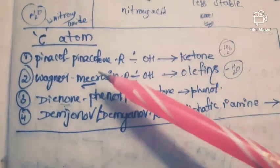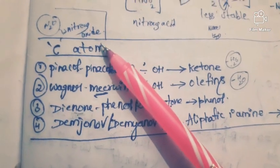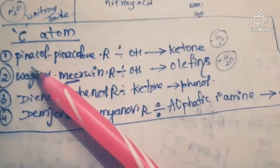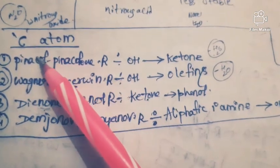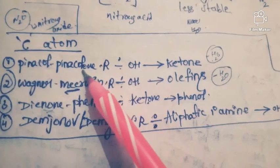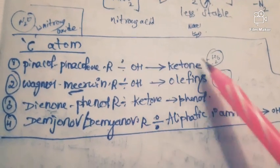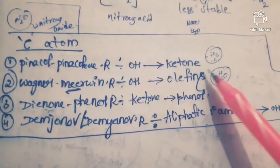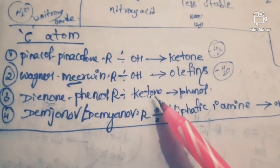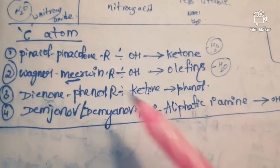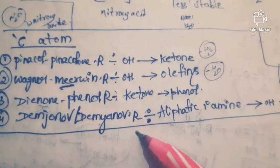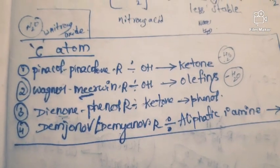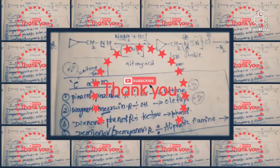Let me summarize all the rearrangements to electron-deficient carbon atoms. First, pinacol-pinacolone rearrangement: alcohol is converted into ketone. Second, Wagner-Meerwein rearrangement: alcohols are converted into alkenes. Third, dienone-phenol rearrangement: ketones are rearranged to phenols. And finally, the Demjanov rearrangement: aliphatic primary amines are converted into alcohols. Hope you understood today's concept. Thank you. In my next video I will discuss the remaining concepts.